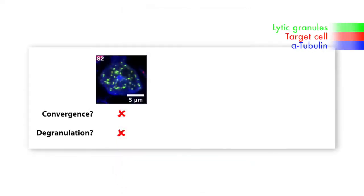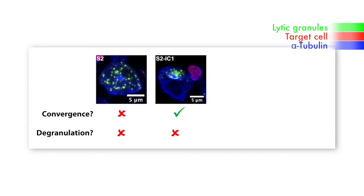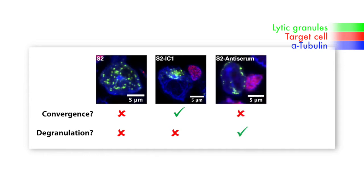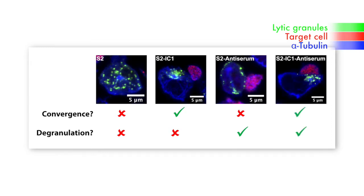They could utilize the S2 cells either expressing no human ligands, expressing the ligand for LFA1 integrin — a strong convergence signal for the natural killer cell — or coated with a polyclonal IgG antibody against the Drosophila cells, which triggers the CD16 receptor on the natural killer cell and is a strong degranulation signal. CD16 does not provide a convergence signal, so it produces degranulation without convergence. Combining the IgG and the ligand for the LFA1 integrin gives strong convergence with degranulation.